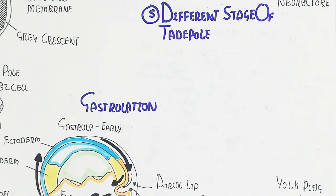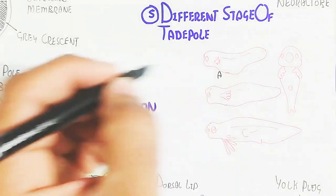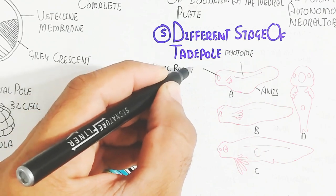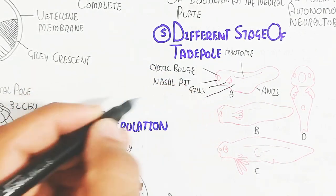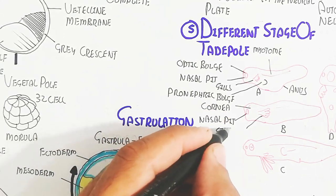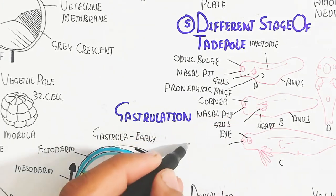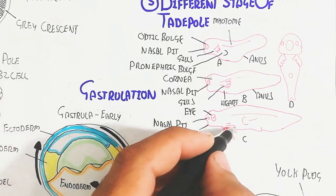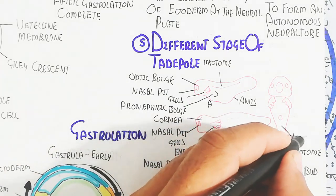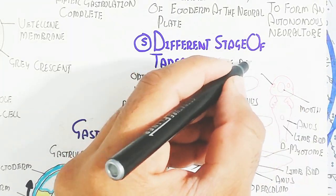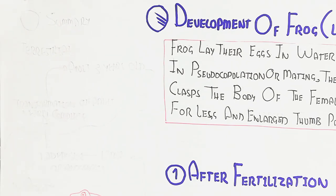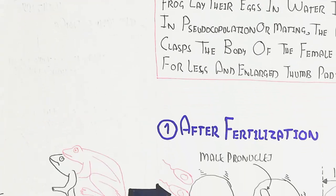Step five shows the different stages of the tadpole — stages A, B, C, and D. In stage A, the tadpole can move in water. The anus, myotome (muscle precursor), optic bulge, nasal pit, gills, and pronephric bulge arise. The tadpole is able to move, swim, and contains gills for respiration; the lungs are not developed yet. Stage C shows the nasal pit and mouth developing, gills further developing, and the operculum and limb bud arising. Stage D shows the remnant of the sucker forming and limb buds arising.